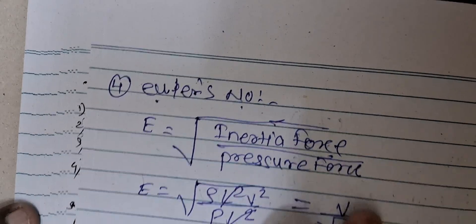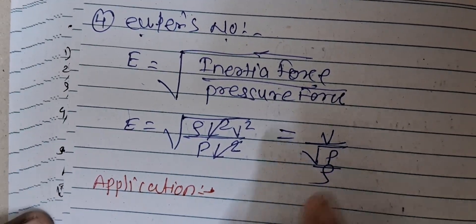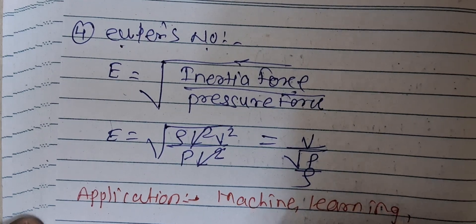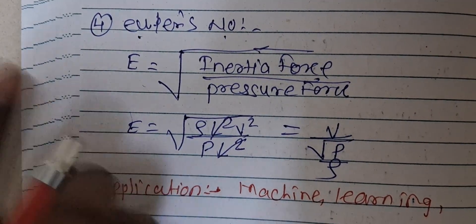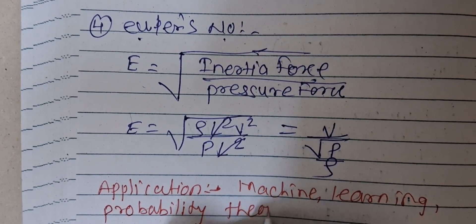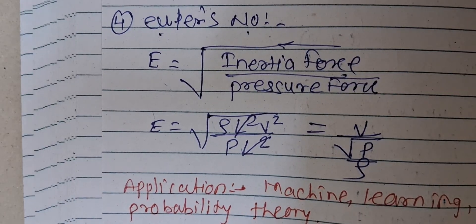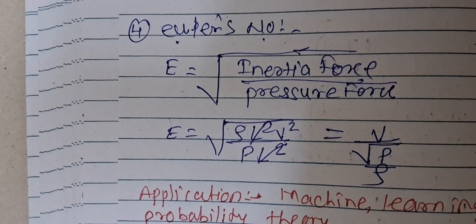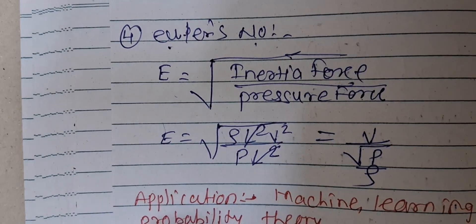The application of Euler's number: it is used in machine learning (AI) and in probability theory in mathematics. In mathematics, we also study Euler's theorem and Euler's method in Engineering Maths. So Euler's number is important in both the mathematics field and machine learning.